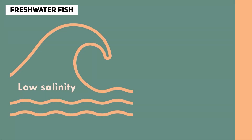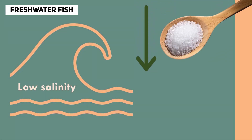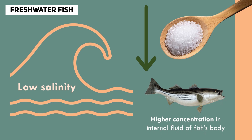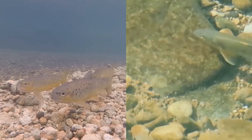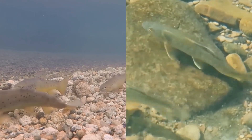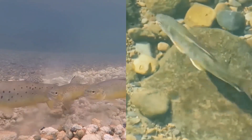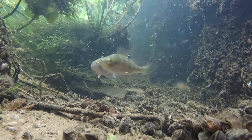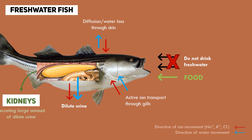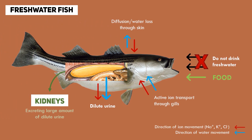On the other hand, freshwater fish live in environments with lower salt concentrations, such as rivers, lakes, and ponds. In freshwater, the salt concentration is lower than inside the fish body. Freshwater fish have adaptations that help them deal with the challenge of gaining enough salts and extracting excess water. Their kidneys are efficient at excreting large amounts of dilute urine, allowing them to get rid of excess water. Freshwater fish do not drink water, and they actively take in salts through their gills and specialized cells in their skin.